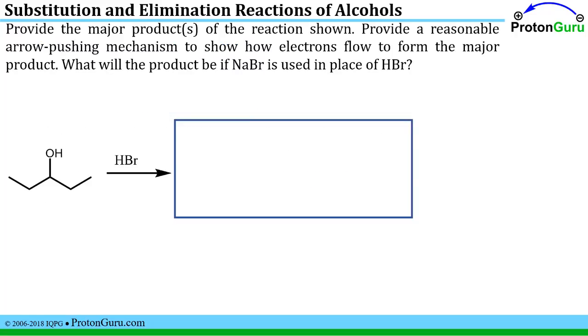This first question is asking us to provide the major product or products of the reaction shown and to provide a reasonable arrow pushing mechanism to show how those electrons will flow to form the major product. We have the second part of the question asking us what product we'd get if we replaced the hydrobromic acid with sodium bromide as well.